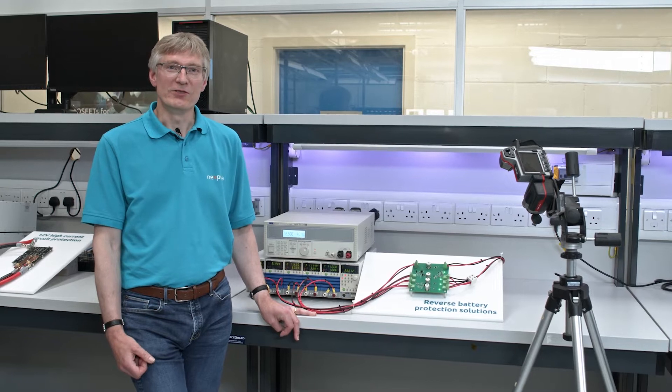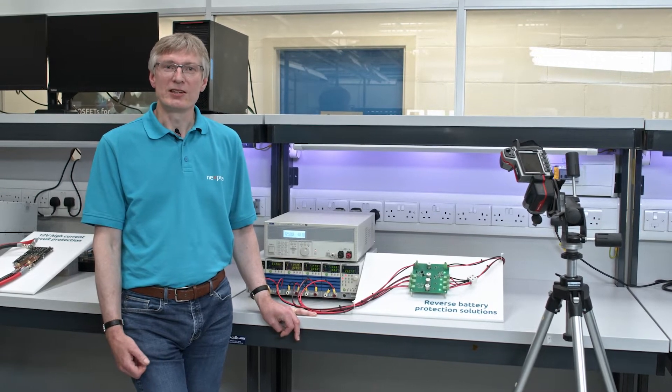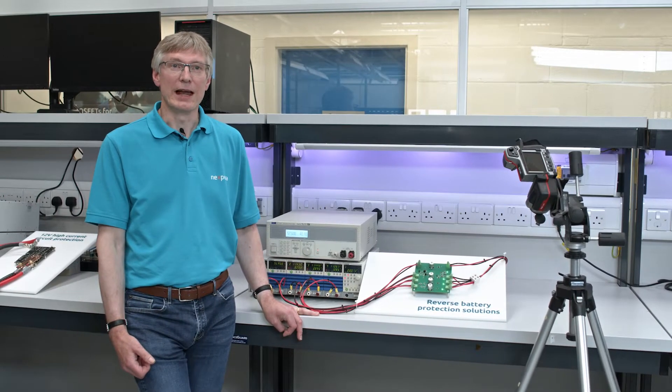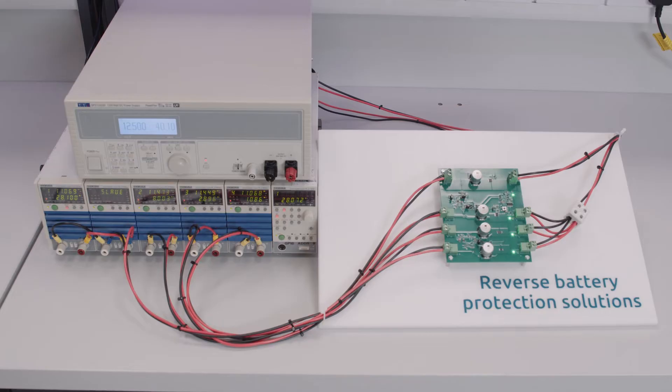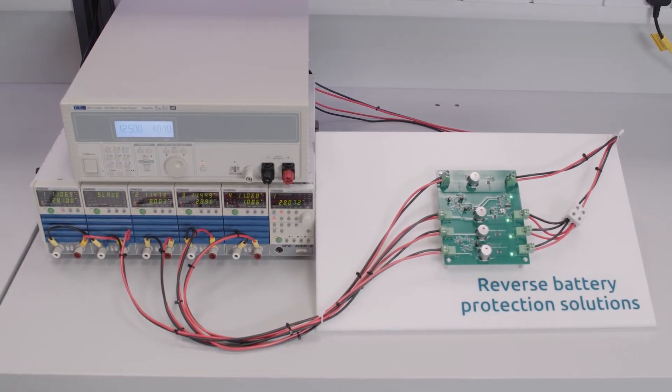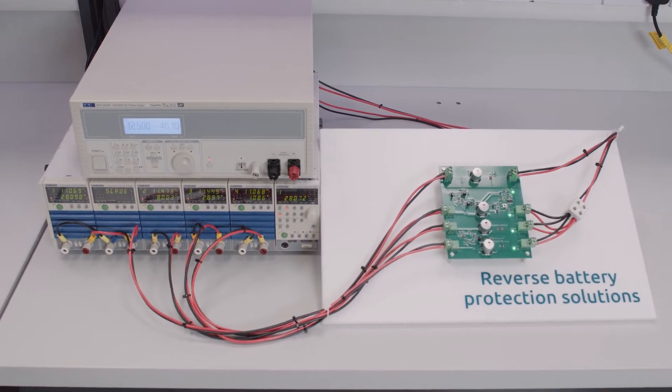In 12 volt automotive systems there is a need to protect against incorrect battery connection. So for instance when a car is being serviced or repaired the 12 volt battery might be connected the wrong way around.